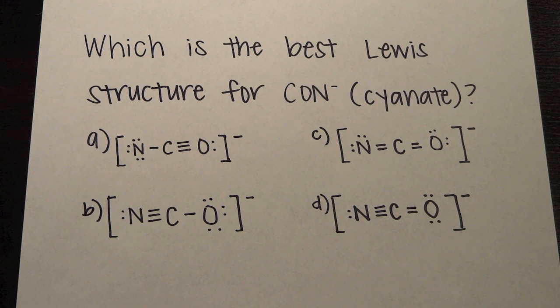So today we have a chemistry question of the day and it's asking which is the best Lewis structure for the cyanate ion which is C-O-N minus.